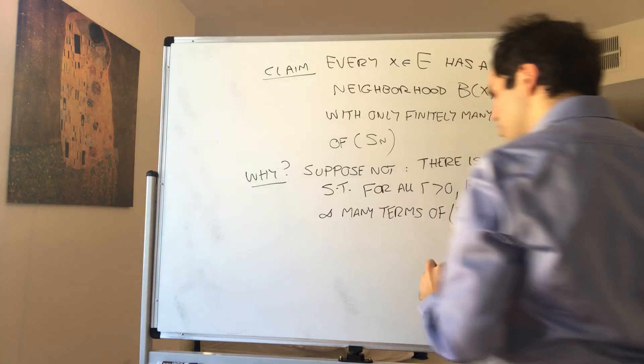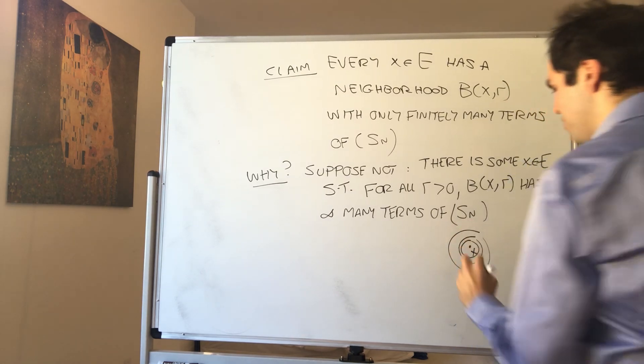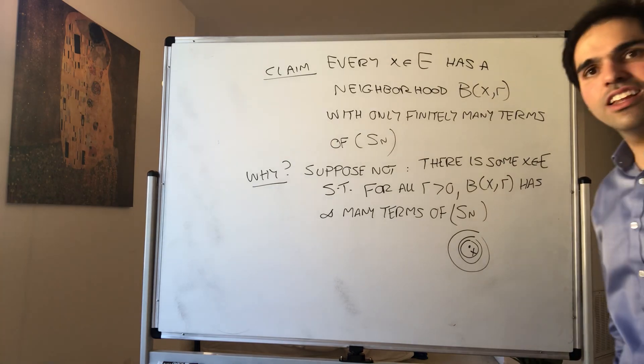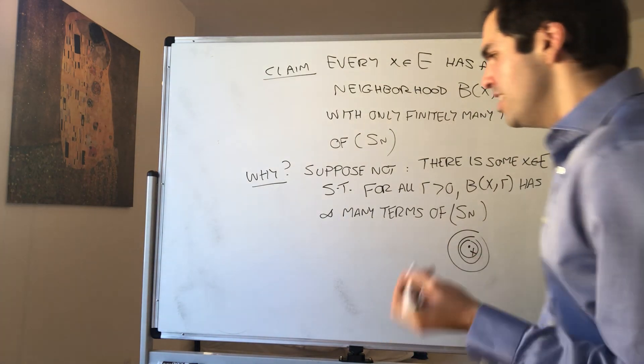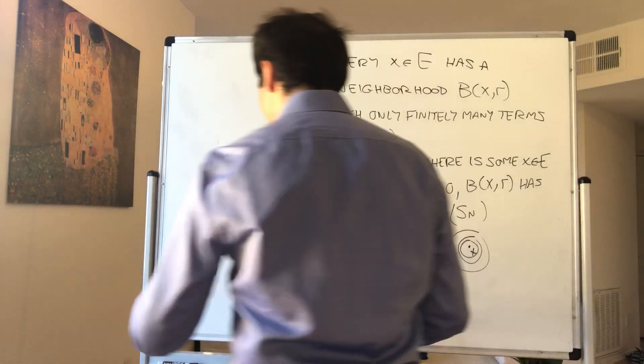So in other words, if there is some X such that no matter how small of a ball we pick, there's always infinitely many terms of the sequence, but I want to show you that in this way we can construct a subsequence.